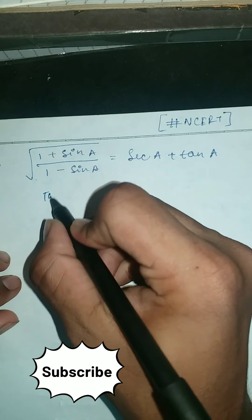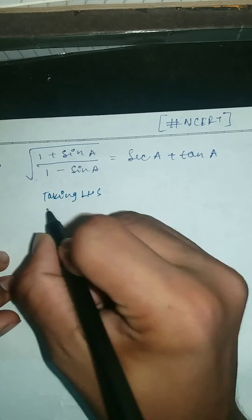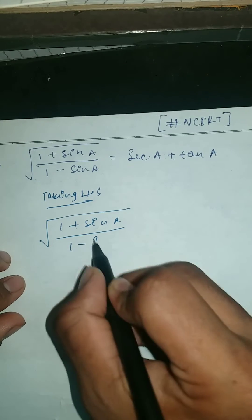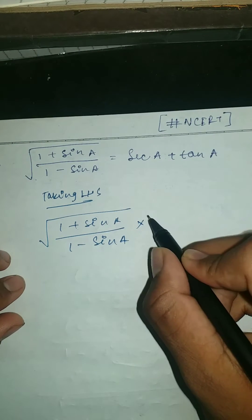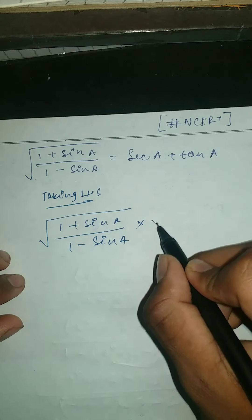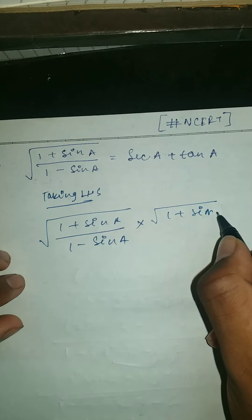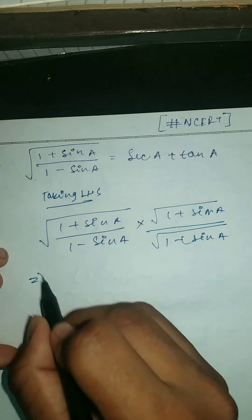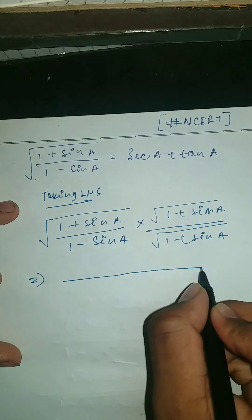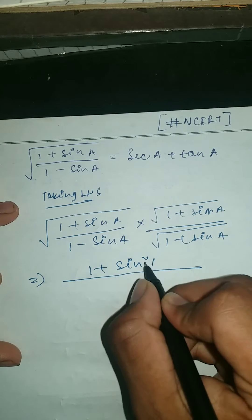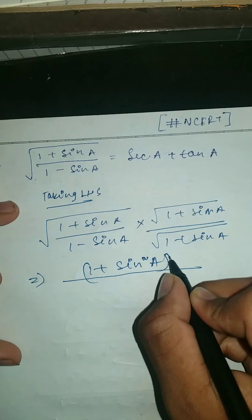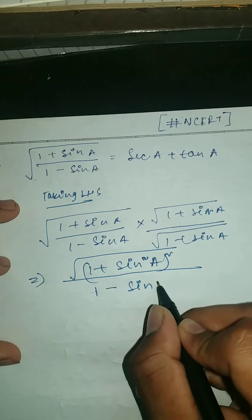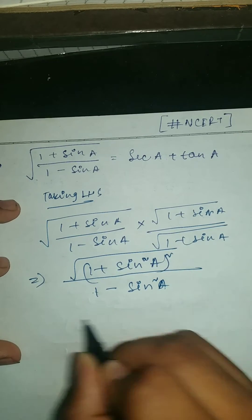Taking LHS, as you can see here (1 + sin A) / (1 - sin A), and we're gonna rationalize this. It should be (1 + sin A) upon square root of (1 + sin A). So here it should be (1 + sin A)² under root, and here it should be (1 - sin² A) under root.